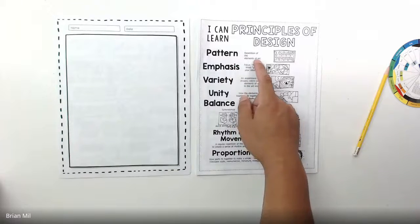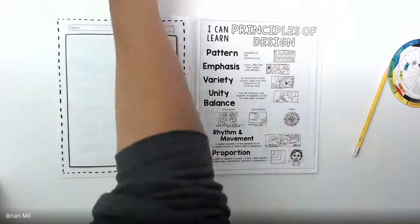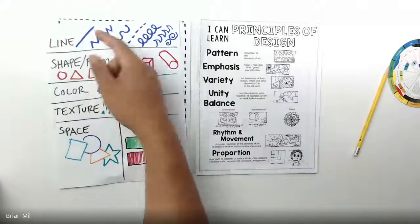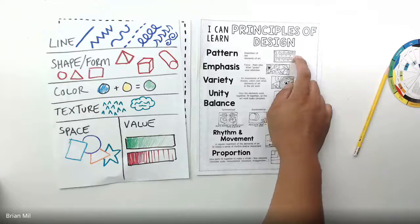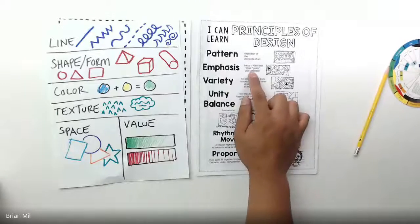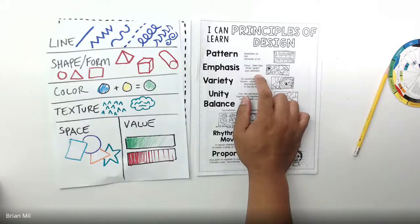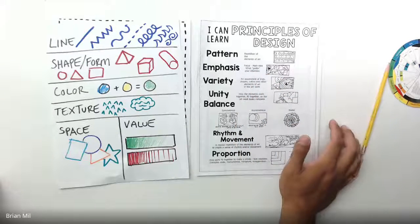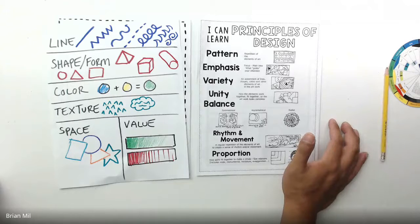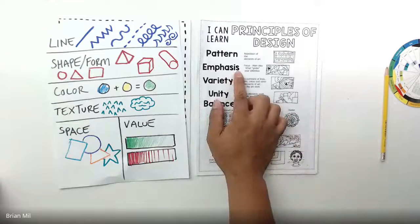So pattern is basically the repetition of the elements of art. So for instance, if like the shapes are repeating, the lines are repeating, just like how in this example, that's called pattern. You guys should know that from second grade. Emphasis. Emphasis means the focus of the main idea that grabs your attention. So if you have a picture of like a landscape and you see the Eiffel Tower, you can easily tell it's Paris, right? So that's called emphasis.